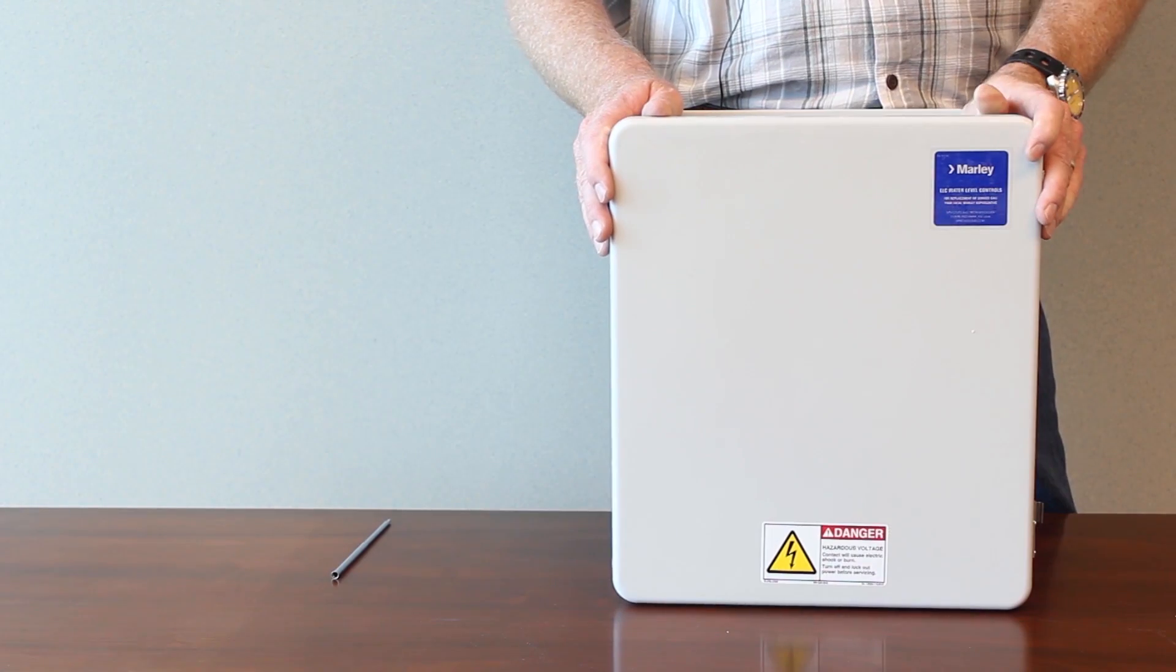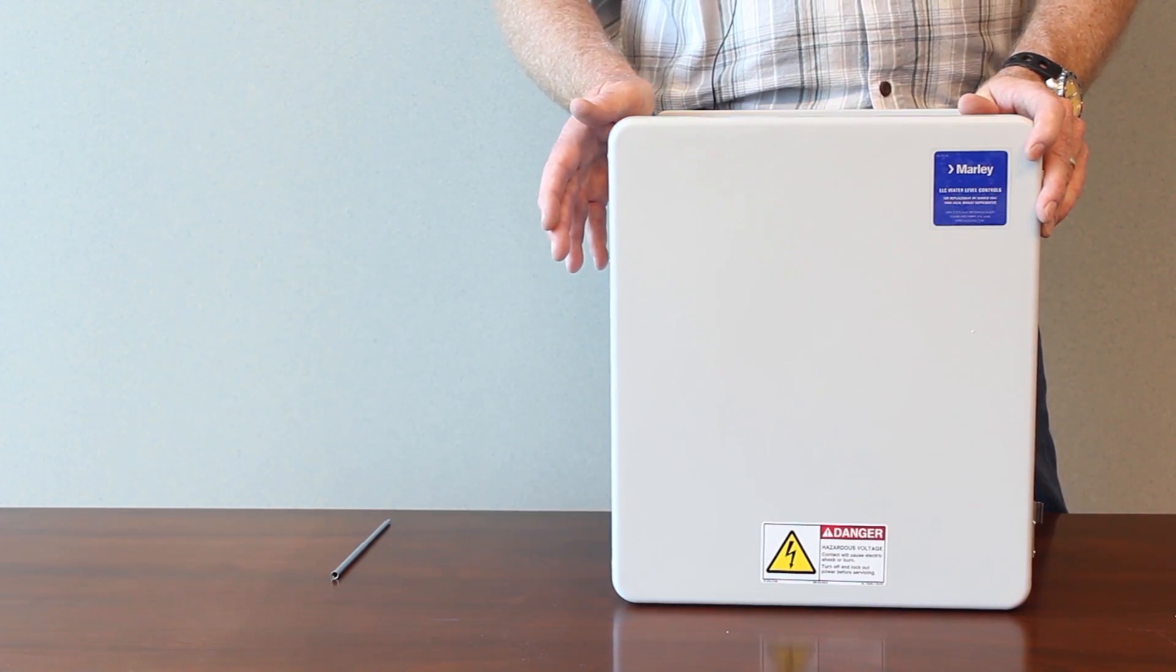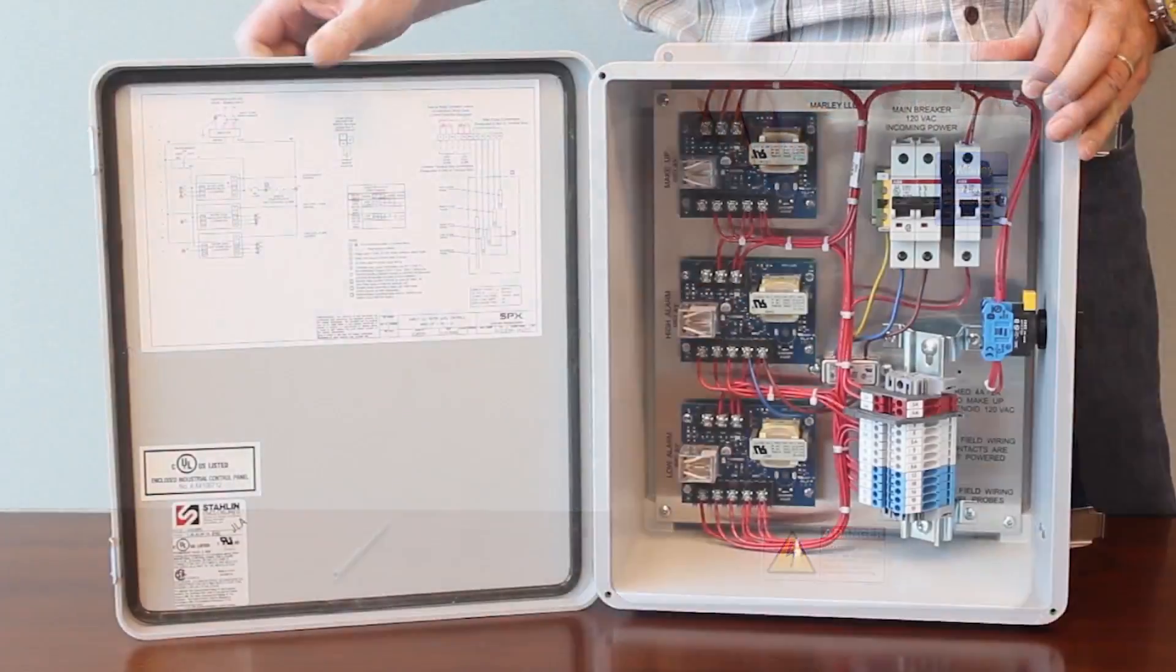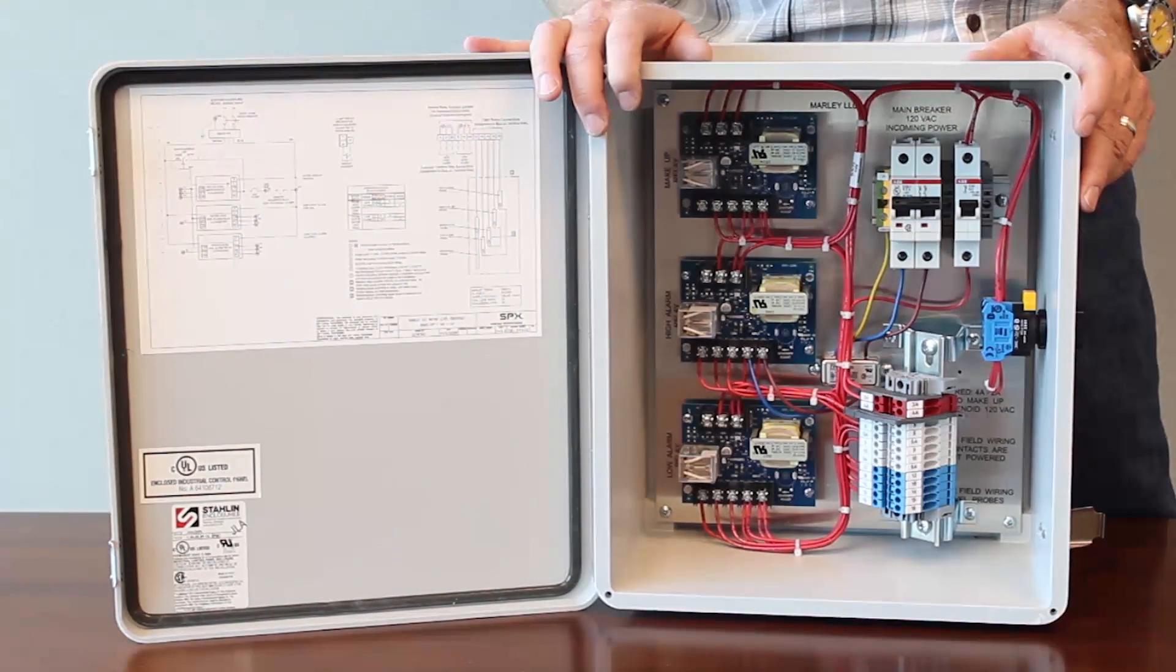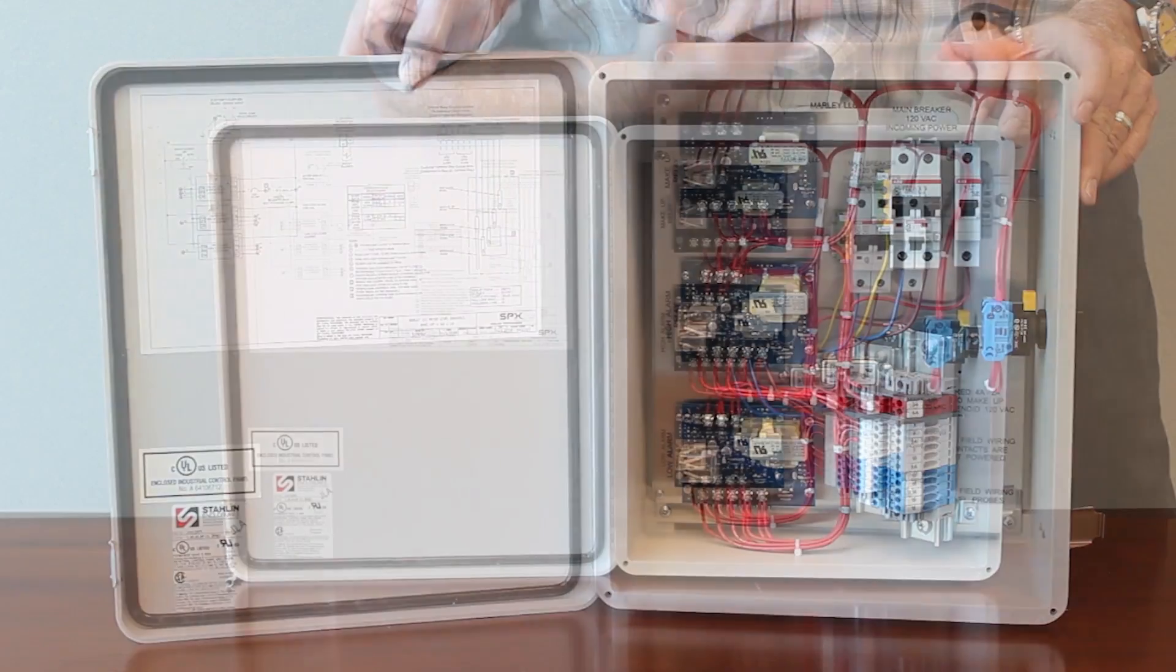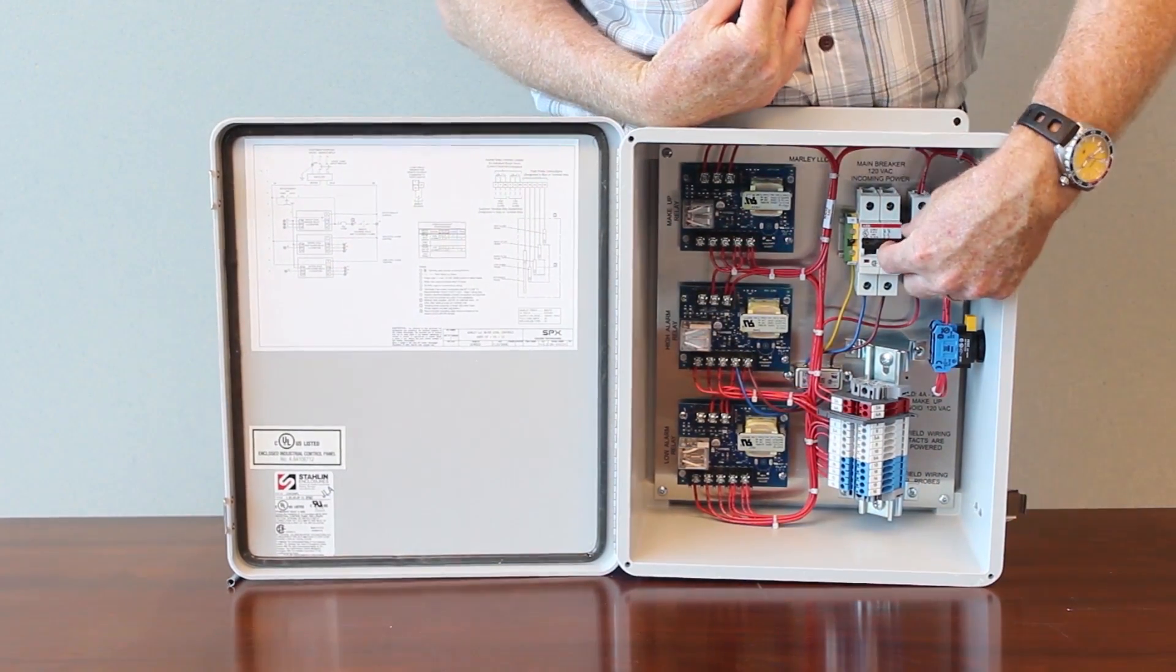The water level control system consists of five major components. A control panel which houses the level cards in a NEMA 4X fiberglass panel. This panel is typically located at the cooling tower or it may be located indoors.